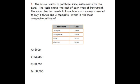The school wants to purchase some instruments for the band. The table shows the cost of each type of instrument. The music teacher needs to know how much money is needed to buy 3 flutes and 3 trumpets. Which is the most reasonable estimate? Again, only estimate. Don't find the exact answer.